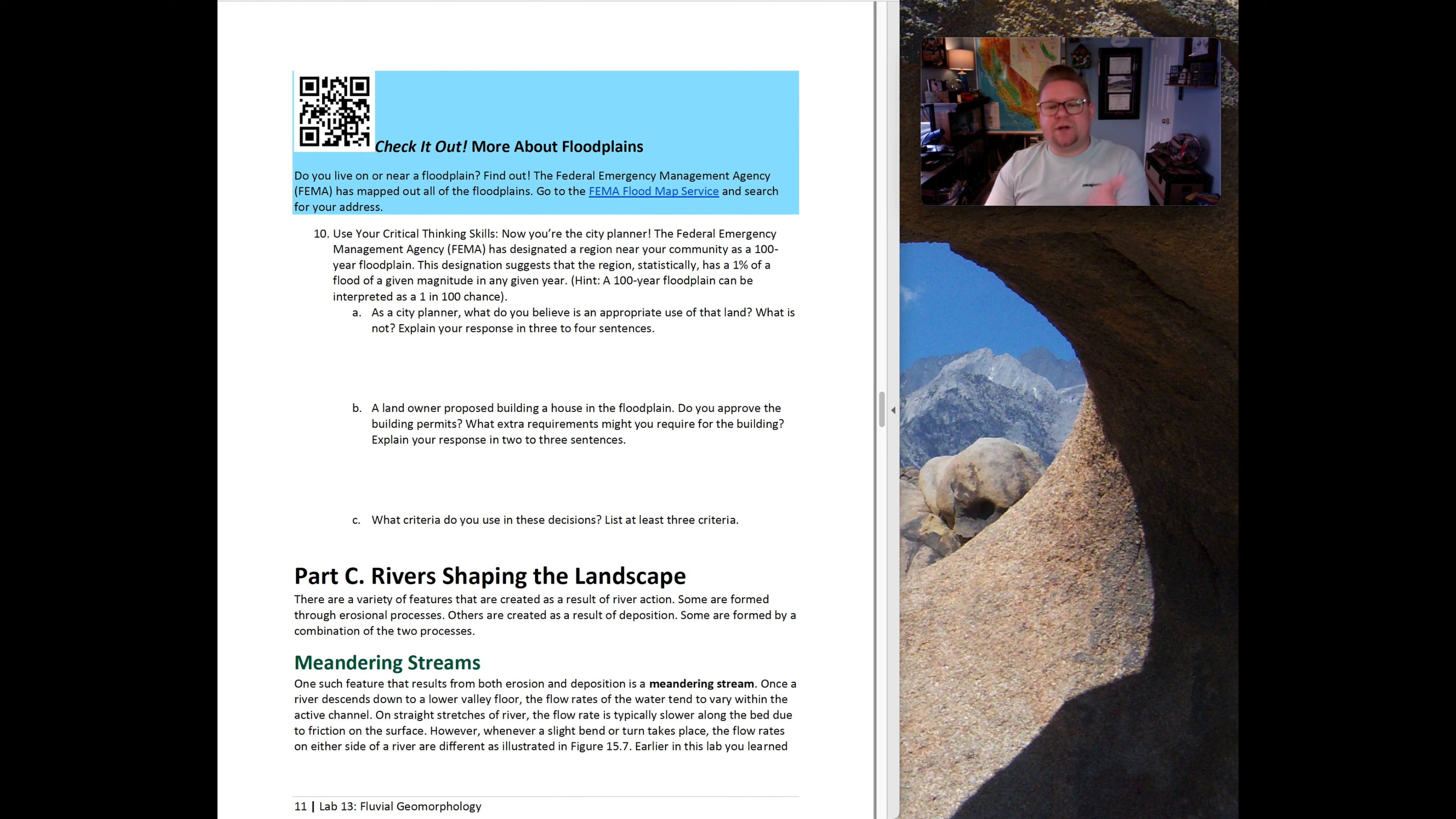Once a river descends down to a lower valley, the flow rates of the water tend to vary within the active channel. Figure 15.7 on the next page is a great example of that. This is the velocity of a stream as it depends on whether the channel is straight or curved. What does that really mean? We've all been in a car and we've been driving very fast in the fast lane. But what happens when you make a sharp turn, say a left-hand turn? All the groceries and people in the back seat get thrown to the right because they were still in motion. Even though the car is moving, those items were still in motion and they're going to go the opposite direction. Well, that's what we find happens in river systems.